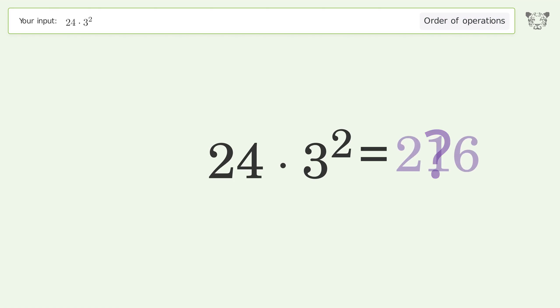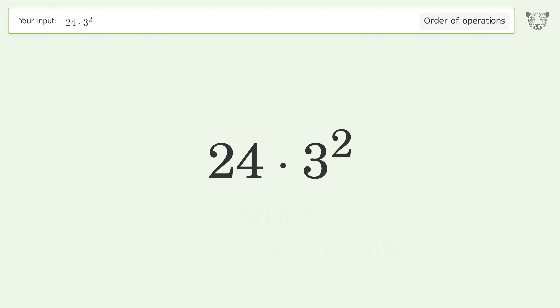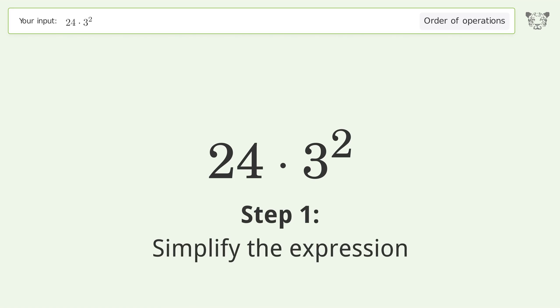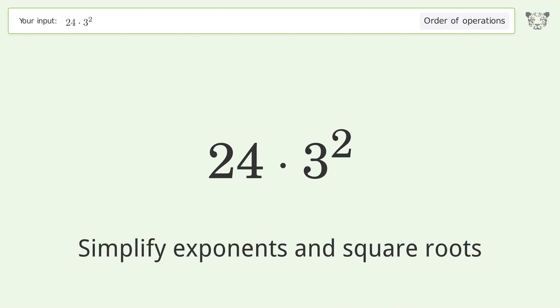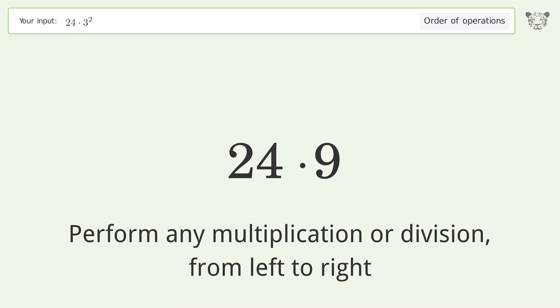Using Tiger to calculate this expression deals with the order of operations — the final result is 216. Let's solve it step by step. First, simplify exponents and square roots: 3 to the power of 2 equals 9.